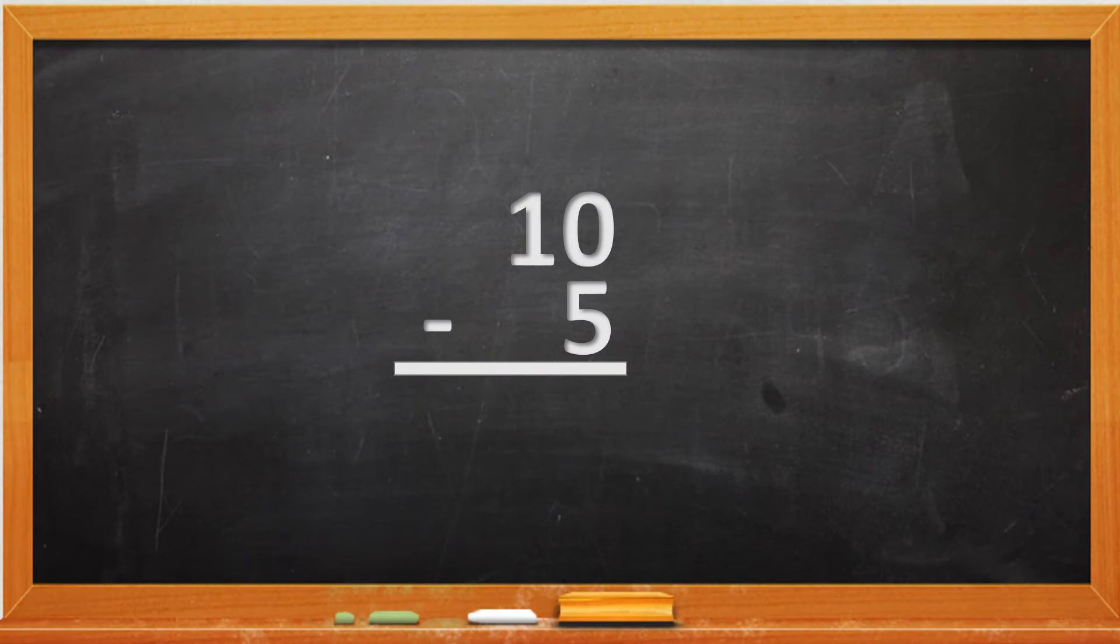So let's get back to 10 minus 5 and do it correctly so we could get a correct answer. So what we will have to do is we will have to borrow. And we cannot subtract a smaller number from a 5.